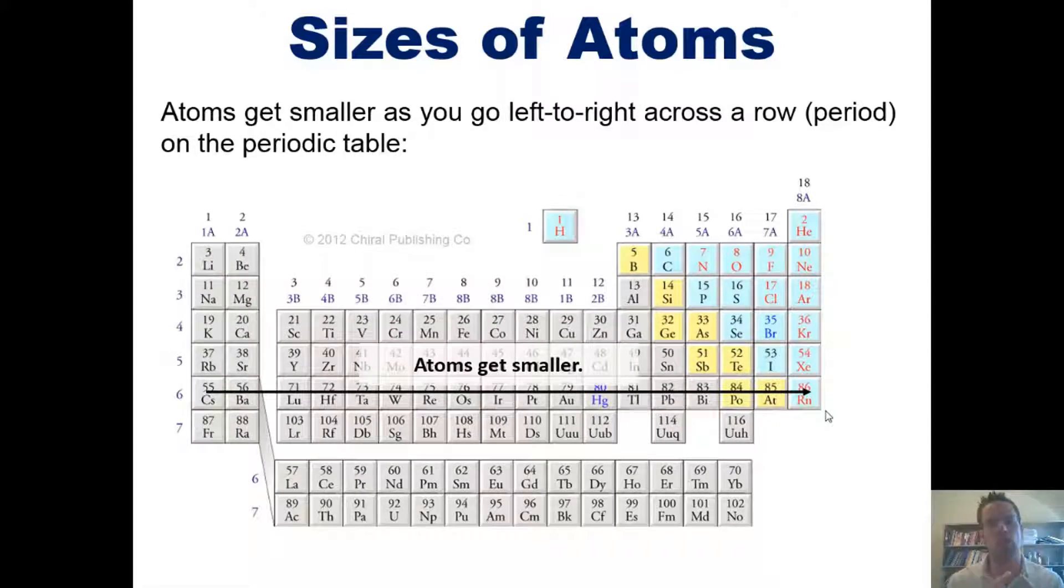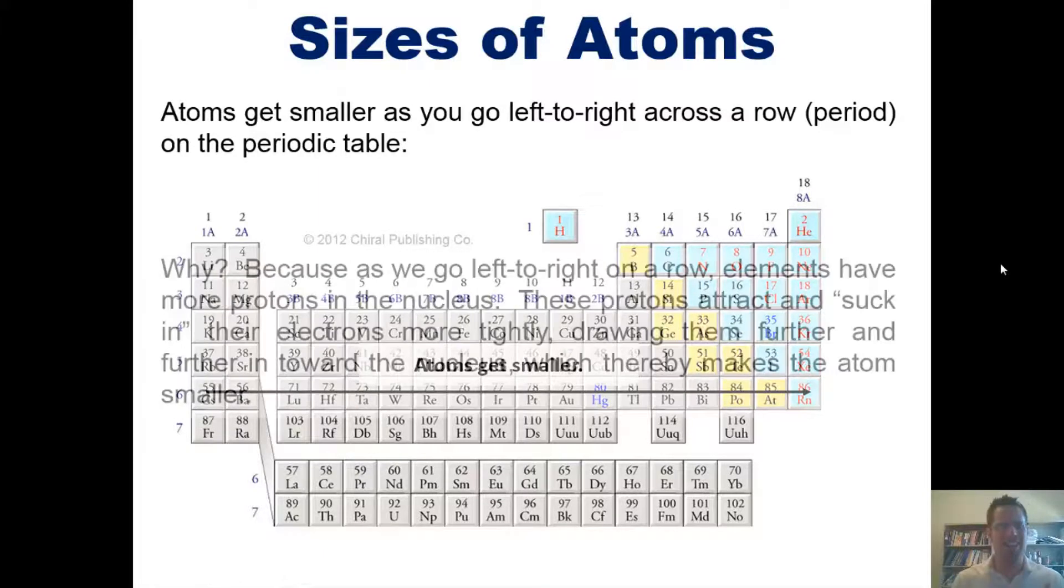Now this is kind of not as intuitive, but atoms actually get smaller as you go left to right across a row or period. As you think about this, you might wonder why, because as you go across a row you're getting more electrons added to each element. For example, oxygen has one more electron than nitrogen, which has one more electron than carbon, and so forth. So you might think oxygen should be bigger than nitrogen, but it's the exact opposite—oxygen is smaller than nitrogen, which is smaller than carbon, which is smaller than boron.